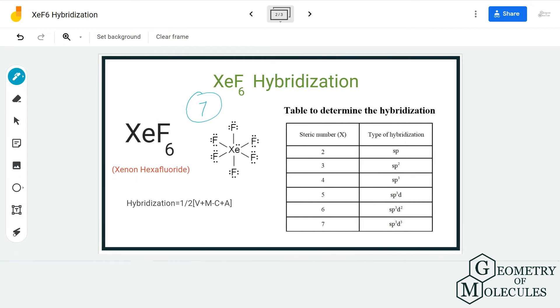As a result, its steric number is seven. And if you look at this table, you can see the steric number seven corresponds to sp3d3 hybridization, and hence this is the hybridization for XeF6.